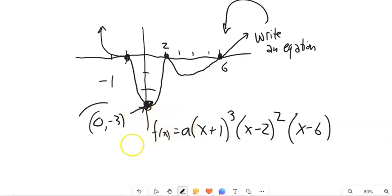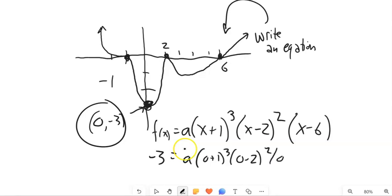But I can use this information to help me get there. In other words, when x is 0, y is negative 3. The output is negative 3. So negative 3 is some multiplier. And x is 0. 0 plus 1 cubed. 0 minus 2 squared. 0 minus 6. Okay.